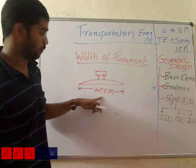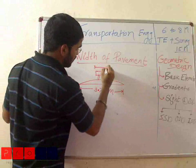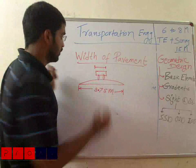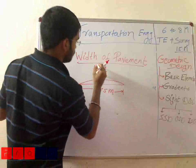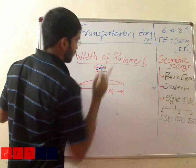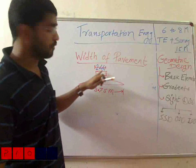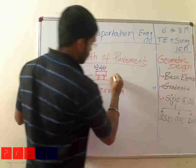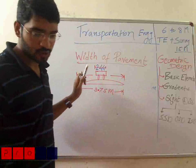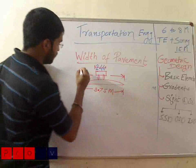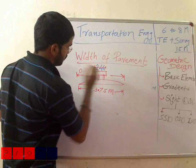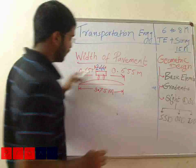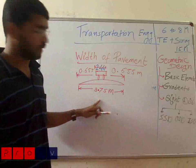So how exactly has this figure come out? We have a standard width of a vehicle as 2.44 meters as per IRC, the Indian Road Congress. So the width of a vehicle is 2.44 meters, and we provide a clearance on either side of 0.655 meters. Ultimately it comes to 3.75 meters. This is for a single lane.